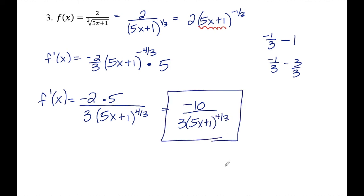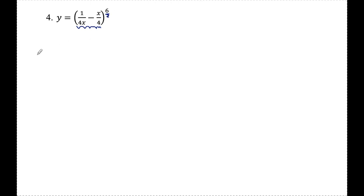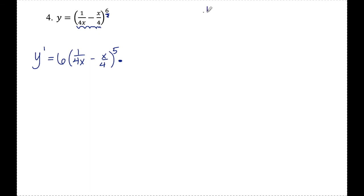Let's look at one last example. Number four: y is equal to 1 over 4x minus x over 4, to the sixth. I'll treat what's inside the parentheses as the inside and something to the sixth as the outside. Finding y prime using the chain rule: bring the 6 to the front, leave the inside alone, drop the exponent by one. Now for the derivative of the inside — x in the denominator is tricky — so I'll rewrite the inside as one fourth x to the negative one minus one fourth x.